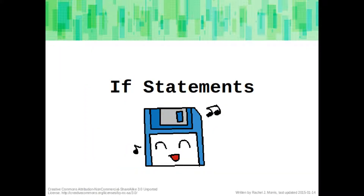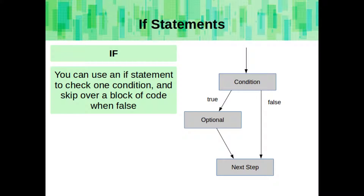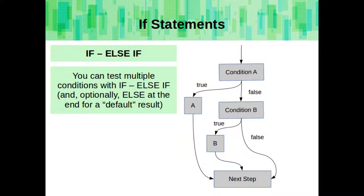Okay, so now let's get into if statements. One of the main methods of branching logic in your program is through if statements. You can use a simple if statement to check one condition and skip over a block of code when that condition is false. With an if-else statement, instead of skipping some code when it results to false, you can have two different options that get executed before continuing the program. And with if-else statements and an optional else statement at the end, you can check multiple different conditions and have multiple code blocks that execute based on those conditions.